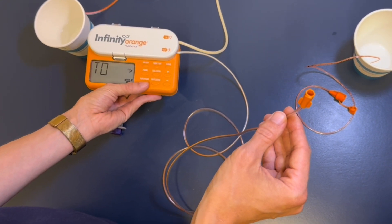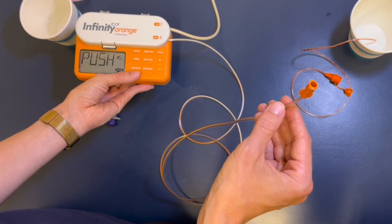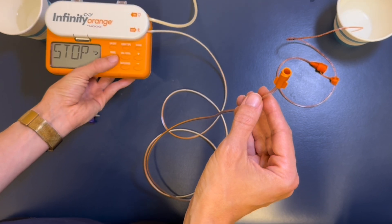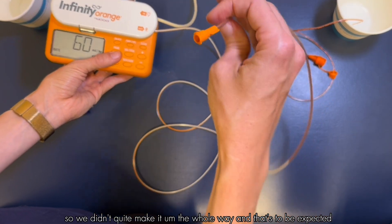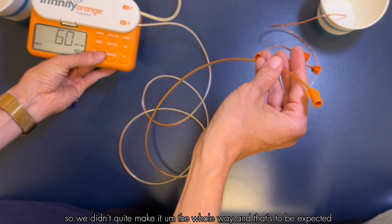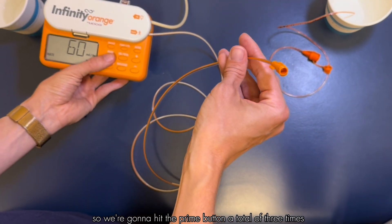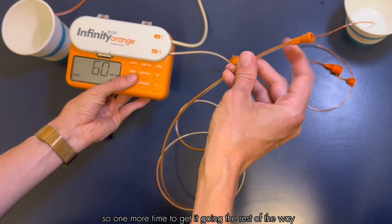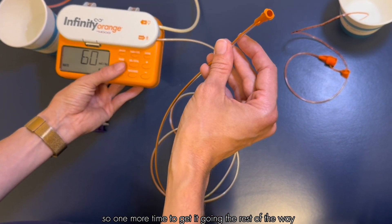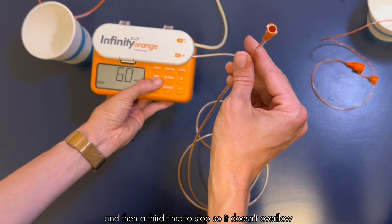And here it comes. So we didn't quite make it the whole way and that's to be expected. We're going to hit the prime button a total of three times. One more time to get it going the rest of the way and then a third time to stop so it doesn't overflow.